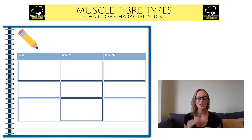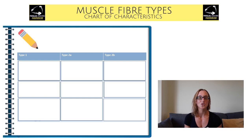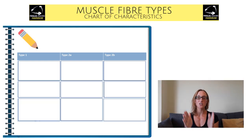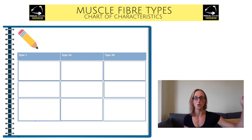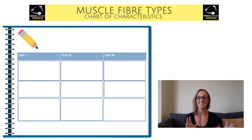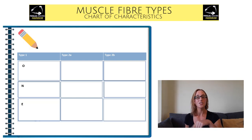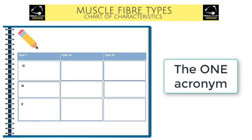Let's get started on this chart. It's a chart of characteristics, so draw a chart similar to what you can see on screen — three columns and four rows. On the first column write type 1, the second column type 2a, and then type 2b, so you've got the title across the top. The easiest way of remembering this and getting it set up in your head is to use a quick acronym. Where you have type 1, write the word ONE down in the remaining boxes — O, N, and E.